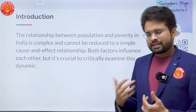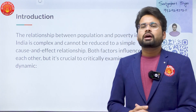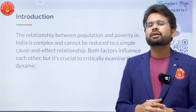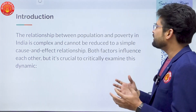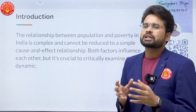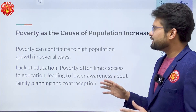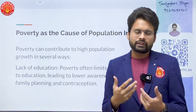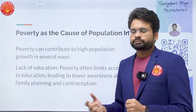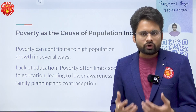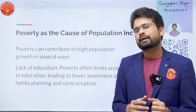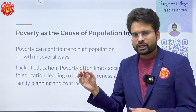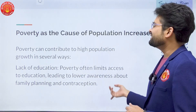The introduction can be very simple. You can start with data and facts — the quantity of population and poverty in our country — or a simple line like: the relationship between population and poverty is very complex and we cannot arrive at a simple cause-and-effect relation, which we need to critically examine. For the first dimension — poverty as the cause of population increase — because of lack of education, the population is not aware of contraceptives, family planning techniques, and their importance. Poverty leads to lack of education, which leads to ignorance towards family planning, and thus population increases.